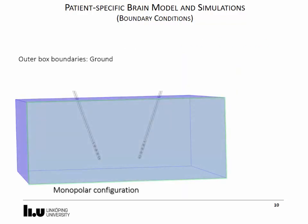With the geometry of the brain model and the leads ready, the boundary conditions are set in order to solve the governing equation. For a monopolar configuration, the ground or returning electrode is set to the walls of the box.